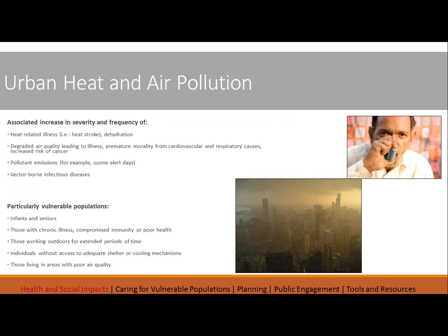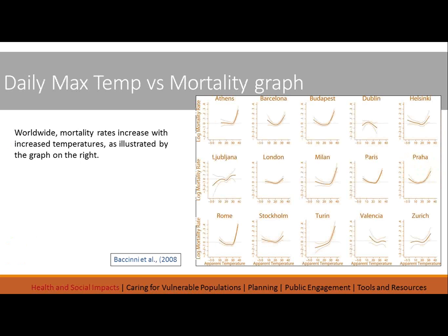This slide focused on European cities illustrates how mortality rates rise dramatically around 28 to 30 degrees Celsius, or around 85 degrees Fahrenheit. Interestingly, fewer people die in Valencia, perhaps because they are more accustomed to the heat. There is an incredible spike in the mortality rate in a number of cities around that temperature threshold.